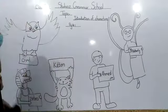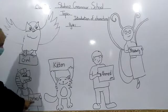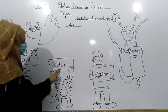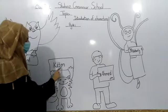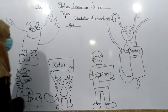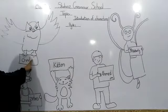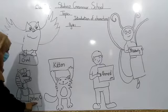Where is Kitten? This is kitten? No. This is kitten? No. This is kitten? Very good. What is this? Kitten. Kitten. Kitten. Where is Zebra? This is zebra? No. This is zebra? No. This is zebra? Very good. What is this? Zebra. Zebra. Zebra.